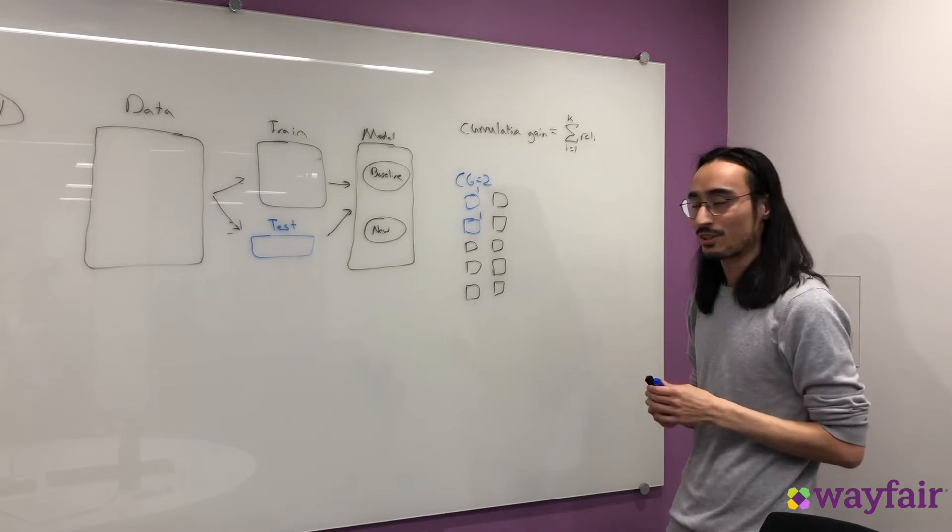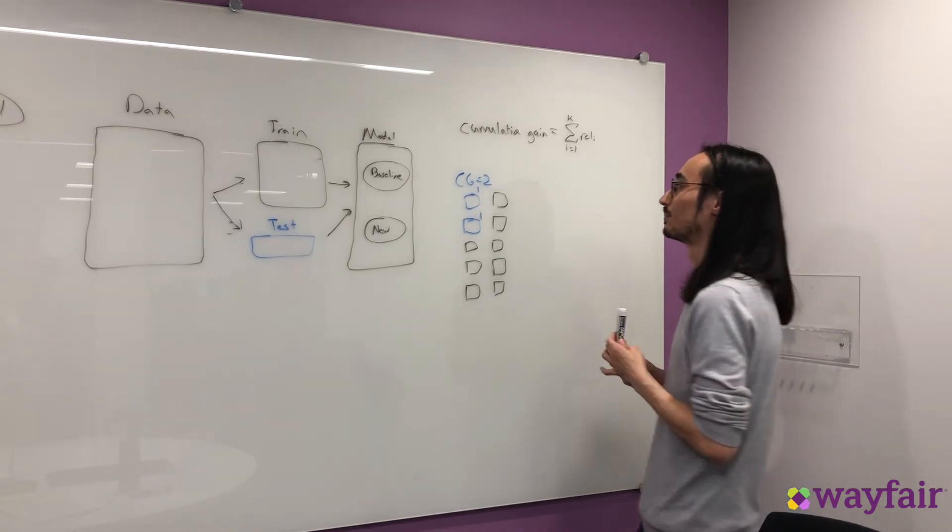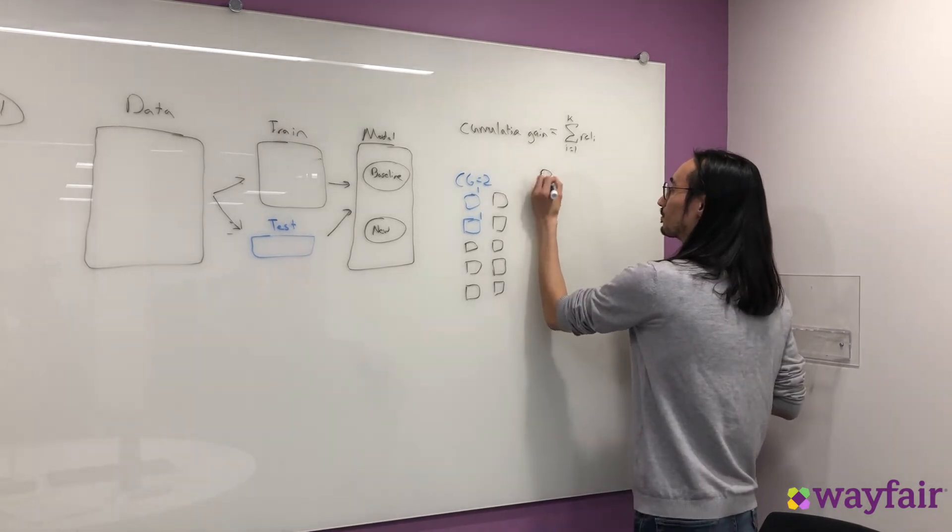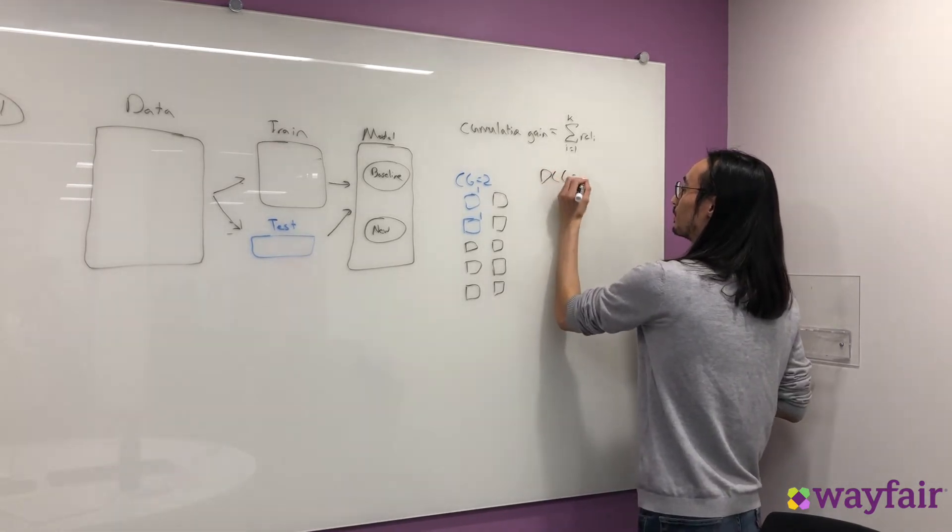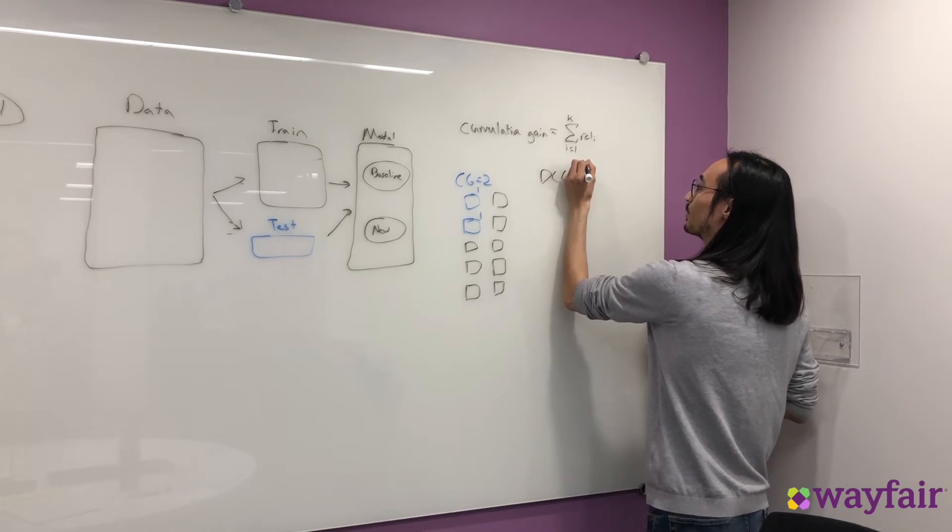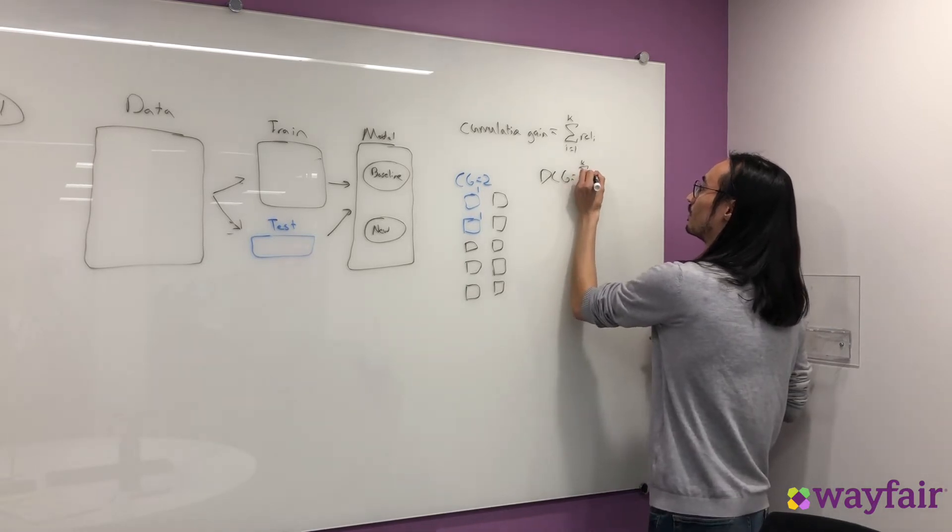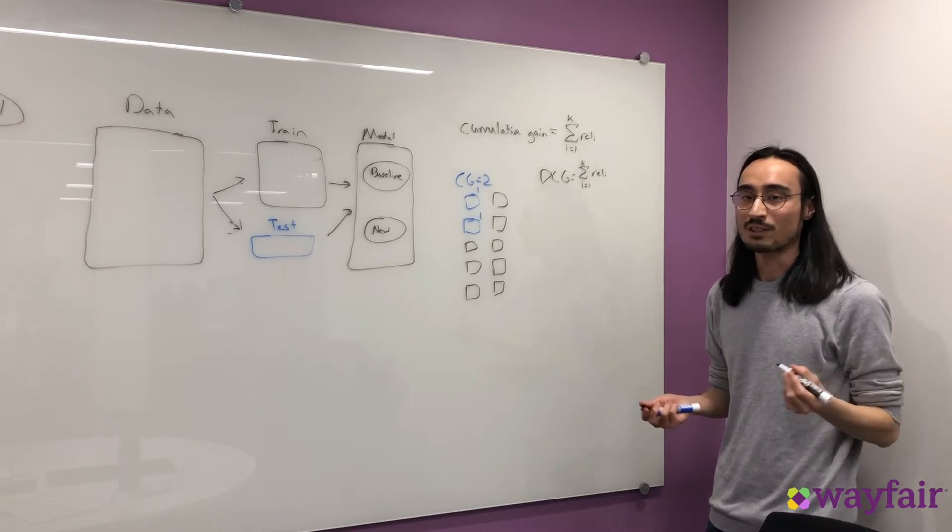One of these metrics is called the discounted cumulative gain, or DCG. To get DCG, it's actually really simple. We just take the same format that we got for the cumulative gain, so the sum from i equals 1 to k of the relevance scores, and we divide it by some reduction factor.